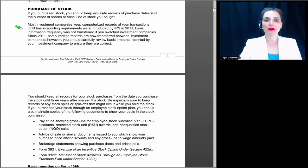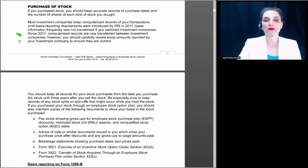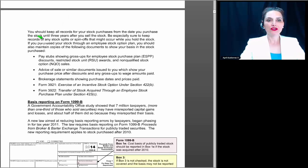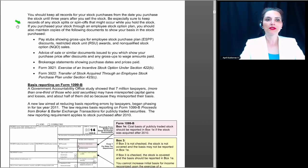Until basis reporting requirements were introduced by the IRS in 2011, basis information frequently was not transferred if you switched investment companies. However, it is now common that they are transferred, but it does not necessarily mean that the basis reported will be correct. You should keep all records of your stock purchases from the date you purchased the stock until three years after you sell the stock. Be especially sure to keep records of any stock splits or spin-offs that might occur when you hold the stock. If you purchased your stock through an employee stock option plan, you should also maintain copies of the following documents to show your basis.